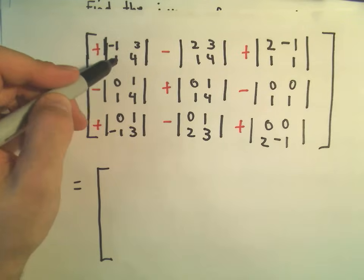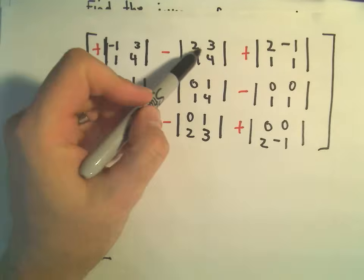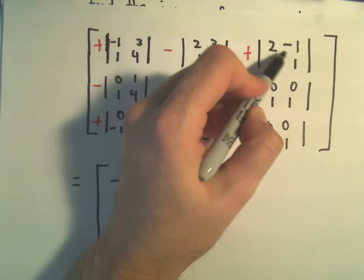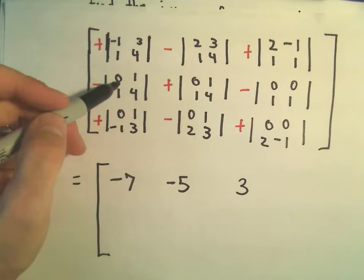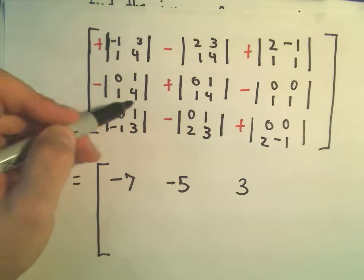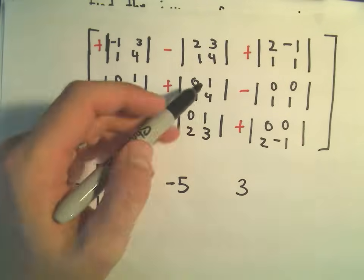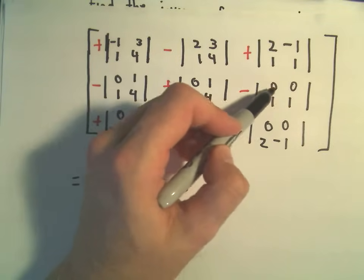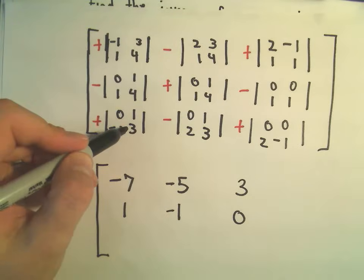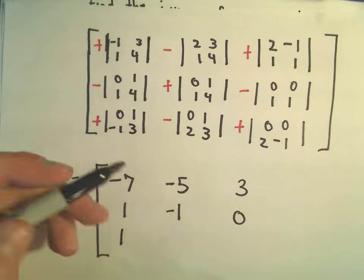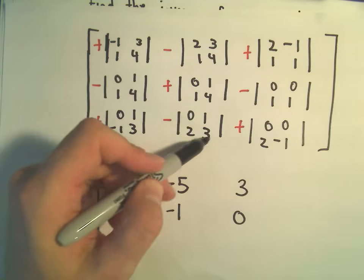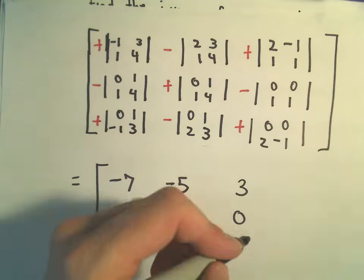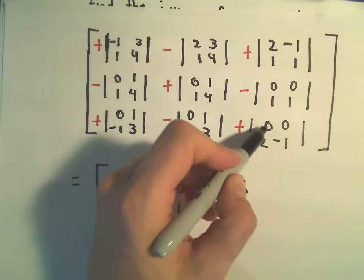For the cofactors: (-1·4 - 3·1) = -7 with a positive sign gives -7. (2·4 - 3·1) = 5 with a negative sign gives -5. (2·1 - (-1)·1) = 3 with a positive sign gives 3. (0·4 - 1·1) = -1 with a negative sign gives +1. (0·4 - 1·1) = -1 with a positive sign gives -1. (0·1 - 0·1) = 0 with a negative sign gives 0. (0·3 - (-1)·1) = 1 with a positive sign gives 1. (0·3 - 2·1) = -2 with a negative sign gives +2. (0·(-1) - 2·0) = 0 with a positive sign gives 0.